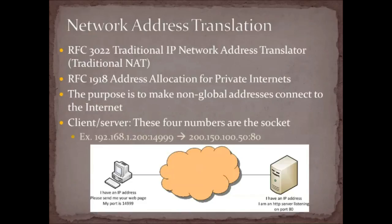Just as a reminder of where we've been: translation is described in RFC 3022 as the IP network translator, and we use RFC 1918 private addresses when we deploy NAT. The whole idea is that you take non-global private addresses and connect them to the internet. The outside interface of your router acts on behalf of all hosts behind it, translating internal private addresses to external public addresses. We're dealing with the client-server architecture, so what's important are the source and destination IP addresses, source and destination port numbers, and whether it's TCP or UDP — that constitutes our socket.